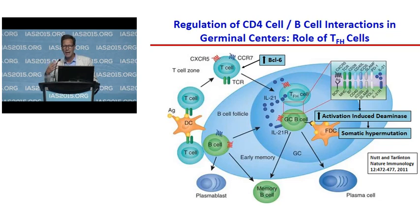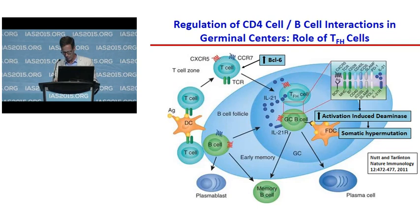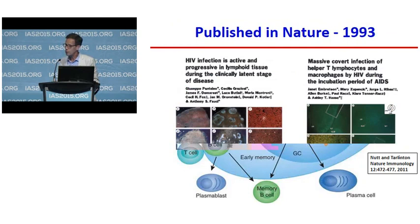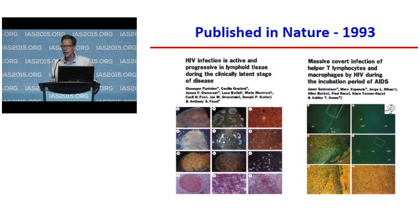One thing that's been known for many years is that HIV and SIV actually attack this germinal center reaction. Back in 1993, it was published that most of the virus replication occurring within lymph nodes actually occurs within these germinal centers. More recently, Jeppe Pantaleo's group showed that if you look at HIV-infected individuals and look at their T follicular helper cells in lymph nodes — defined by expression of PD1 and CXCR5 — that population contains the highest copy numbers of HIV DNA.